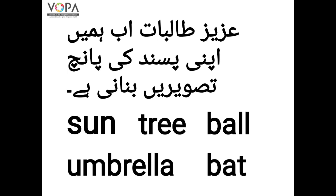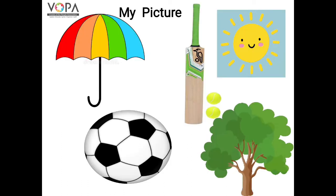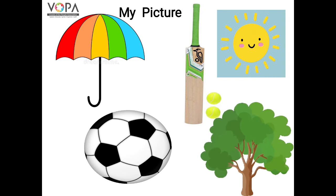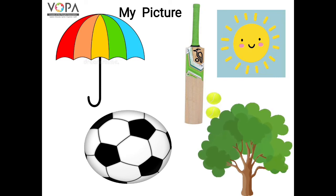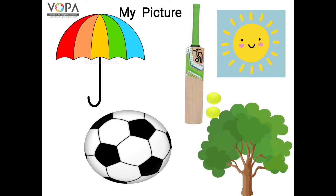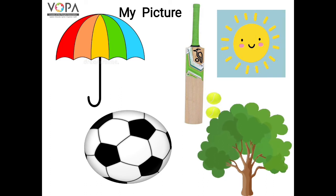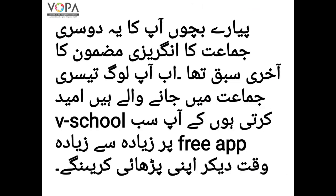अब हमें अपनी पसंद की पांच तस्वीरें बनानी हैं: sun, tree, ball, umbrella, bat। प्यारे बच्चो, यहाँ देखिए my pictures — यह हमारी पसंद की पांच तस्वीरें हमने यहाँ पर चस्पा की हैं। आप अपनी pencil की मदद से अपनी पसंद के पांच الفاظ لے کر उनकी तस्वीरें बनाएंगे और لطف اٹھائیں گے۔